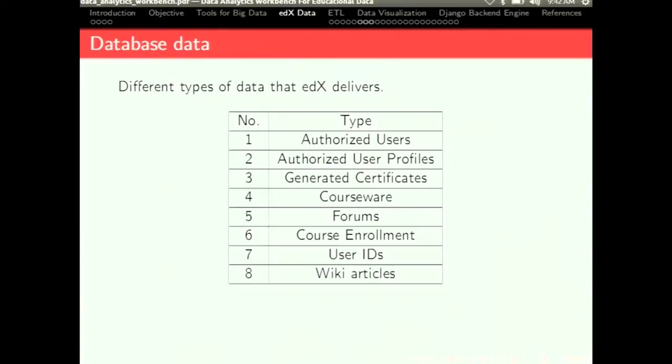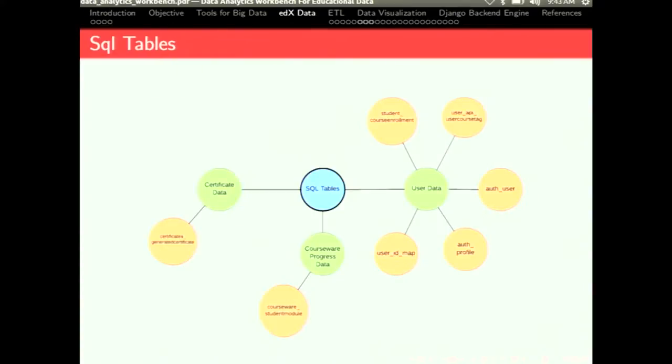The database data can be divided into these eight types in which around seven are in the SQL table formats and the forum data is stored into the MongoDB database. And this is basically the SQL mind map of the table. We categorize all the useful tables into three ways like certificate data contains the generated certificate information, and the user data contains the student demographics data, and the courseware progress data contains the progress of the student in a particular course.